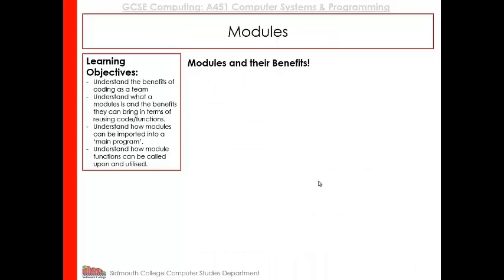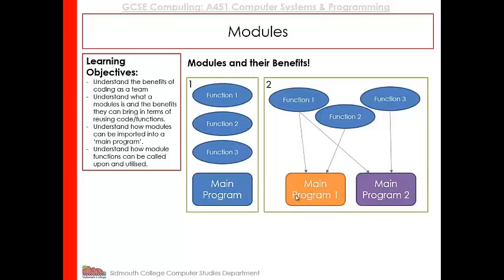So we're going to look at how we can actually make modules. Illustration one shows a normal program where we have a main block of code and we can call upon any one of three functions, passing values in and getting values back. Illustration two shows how modules could be more beneficial — function one is stored in one module file, function two in another, function three in another. Any program can call those functions: main program one could call functions one and two, main program two could call functions one and three. It doesn't matter how many programs you write; if you want to use those functions you can, providing those modules are there.